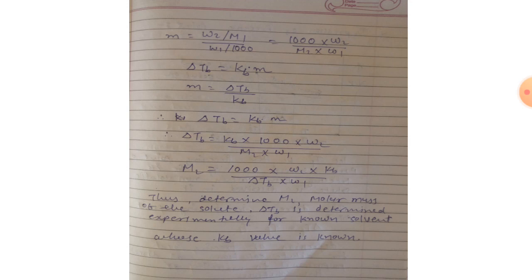Using this formula, we can determine M2, the molar mass of the solute. Delta Tb is determined experimentally for the solution, and the Kb value is known. Both topics — relative lowering of vapor pressure and elevation of boiling point — are very important for exams. Their formulas must be memorized and examples are frequently asked. Be careful and be prepared.